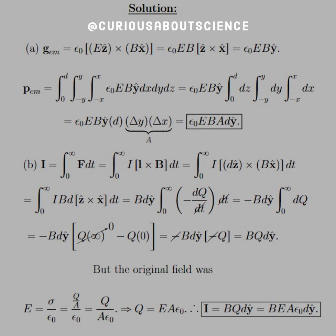we get Q = EAε₀. Therefore, the impulse is BQd ŷ, or substituting Q, we have I = BEAε₀d ŷ, which is exactly what we found from the electromagnetic momentum.